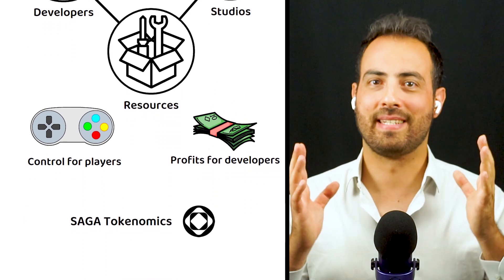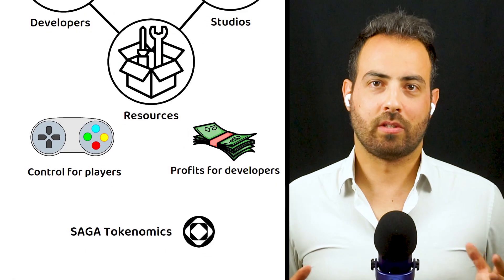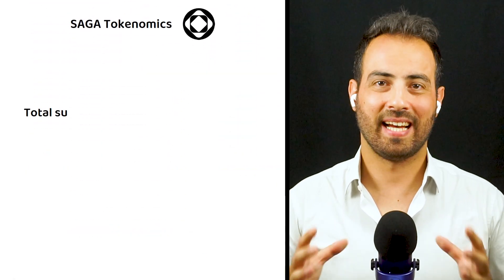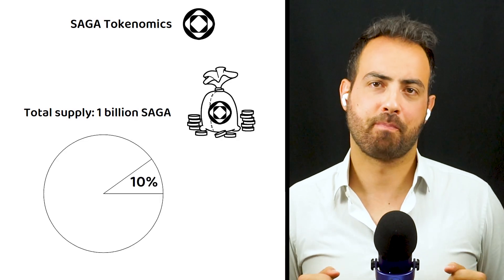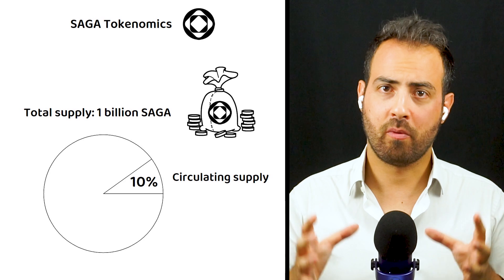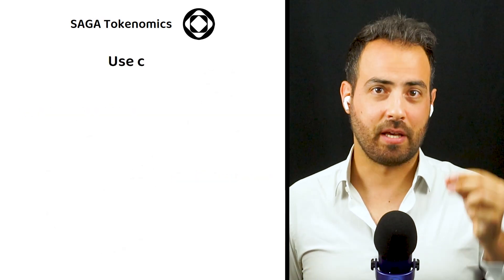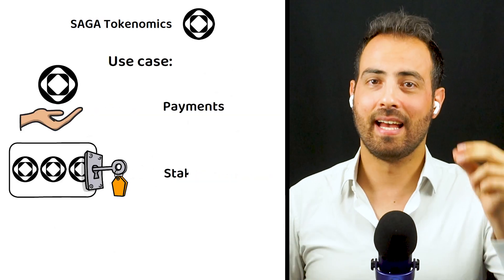In total, there will be 1 billion Saga tokens, with about 10% currently on the market. As is typical for proof-of-stake currencies, they can be used for payments, staking, and governance.